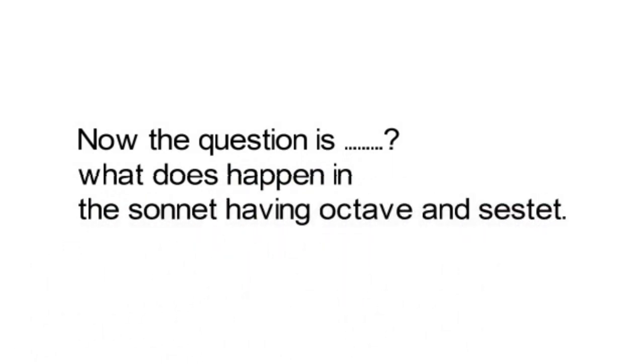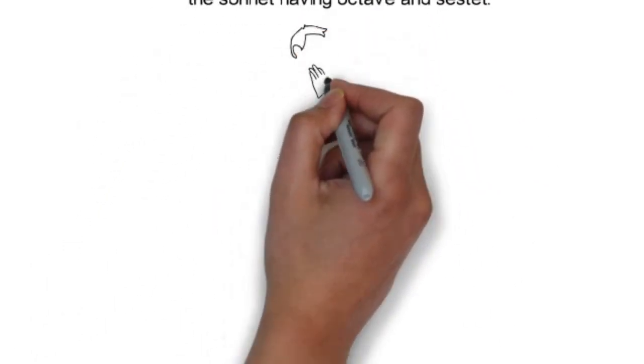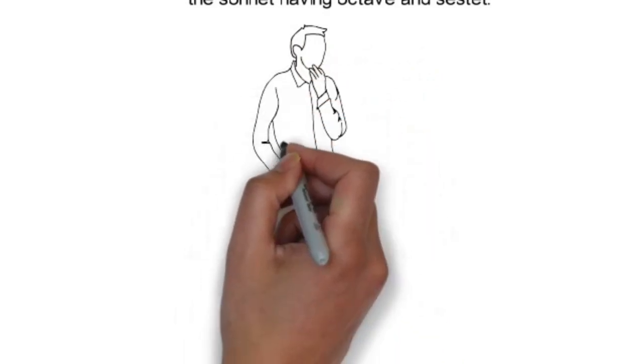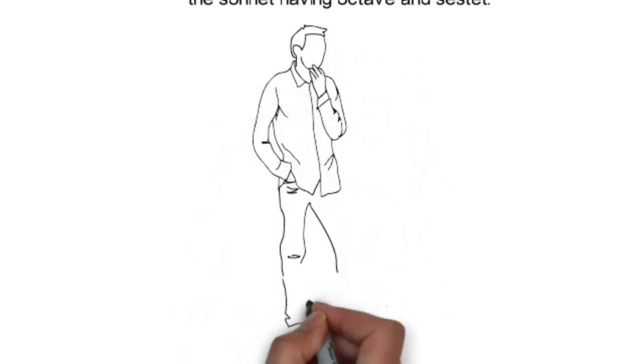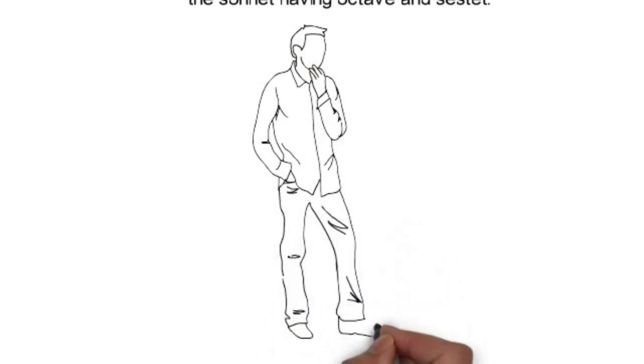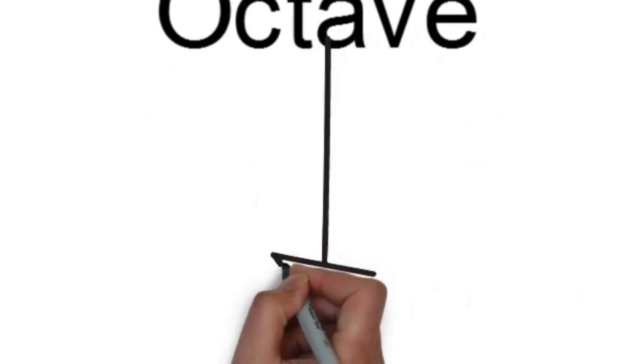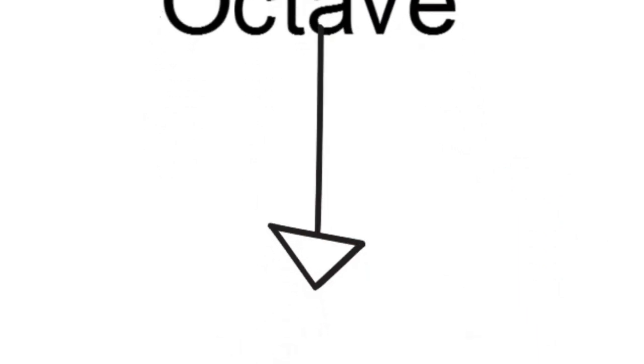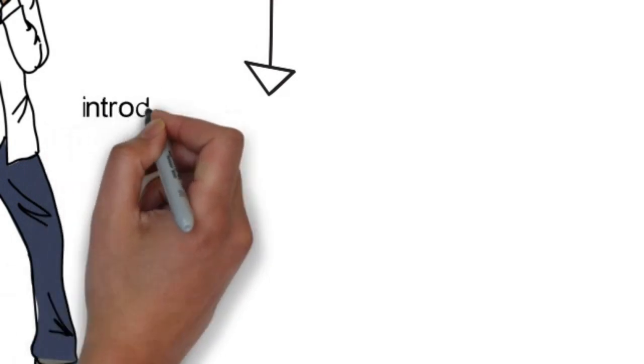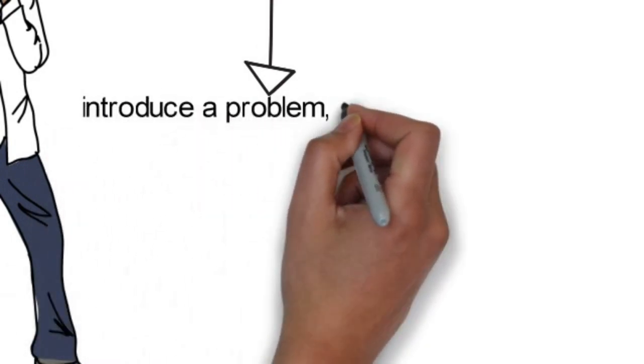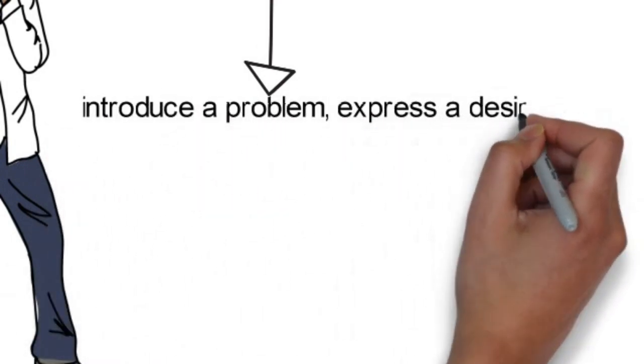That we'll discuss in the last. And now we have like there we have the question, what is the basic purpose of octave and a sestet line? So it is we find that two different parts, octave and a sestet.